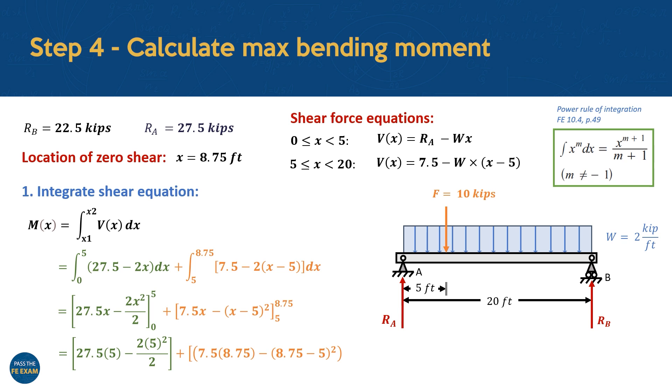For the second integral, we do the same. First, we substitute the upper limit of x is equal to 8.75, giving 7.5 times 8.75, negative (8.75 negative 5) squared. Then we substitute the lower limit of x is equal to 5, which gives 7.5 times 5, negative (5 negative 5) squared. We subtract this lower limit from the upper limit. From here, we can use our calculator to evaluate this expression. Finally find that the maximum bending moment in the beam is equal to 126.56 kips feet.